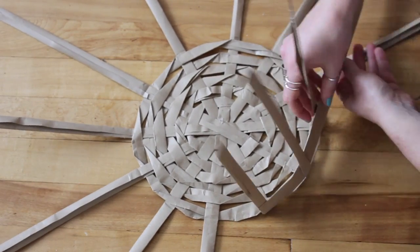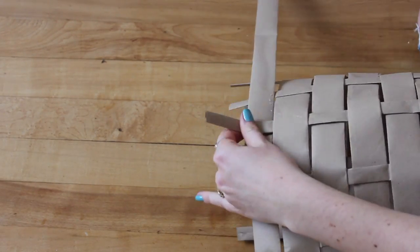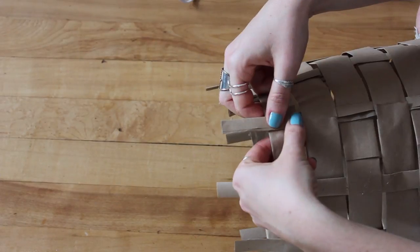And basically you just go around and you continue your weaving process in and out or under and over, hot gluing all along the way.